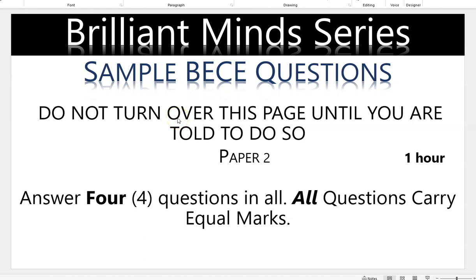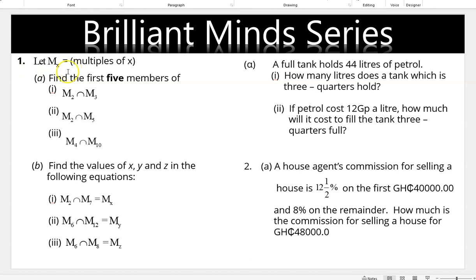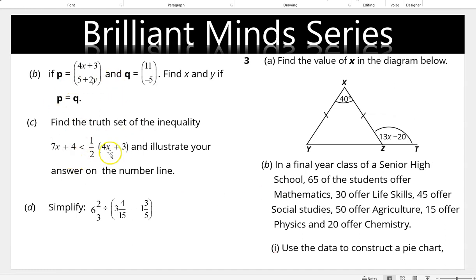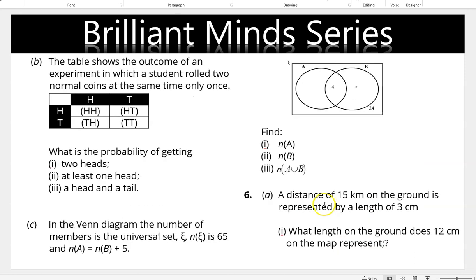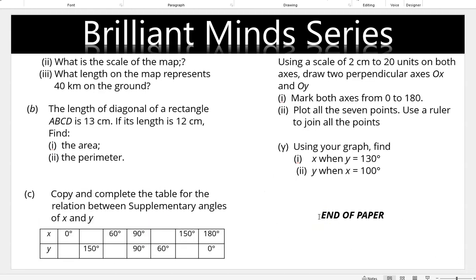Hello everyone, this is the Brilliant Mind Series. These are sample BECE questions in mathematics for all BECE candidates preparing to write their final exams this year. Topics include: set problems, area of plane figures, commission, vectors, equations, linear inequalities, fractions, angles, statistics (pie chart), interior angles of a regular polygon, hourly rate, simple interest, binary operations, highest common factor (HCF), probability, set problems (Venn diagram), scale on a map, area and perimeter of plane figures, and graphs of relations.